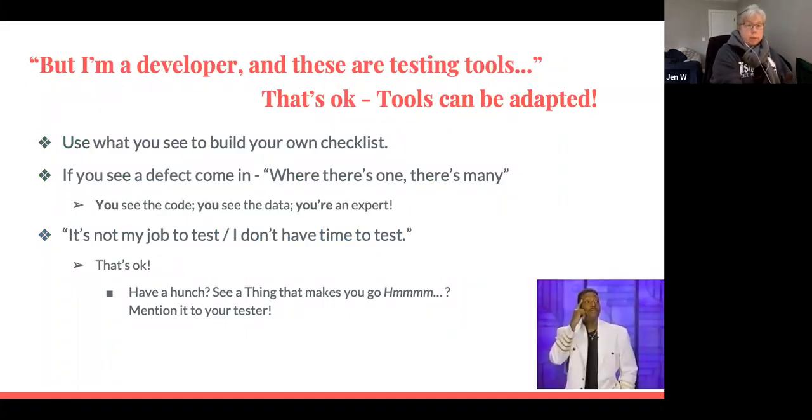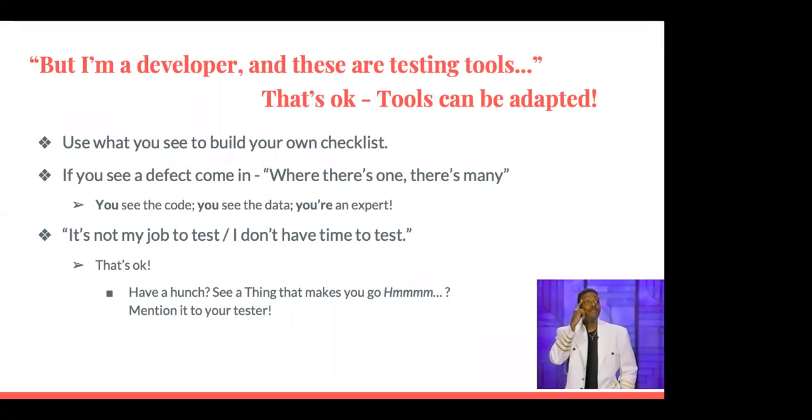So I know I have a lot of developers in the room. So you're a developer, but you're talking about testing tools. Well, that's okay. Tools can be adapted. So you can use what you see in your own world to build your own checklist. Maybe it's just for you. Maybe it's one you share with other devs. Maybe it's one you can share with the whole team. If you see a defect come in, you can think of, consider thinking about, I don't want to tell you how to do your job. You can think about thinking about where there's one, there's many. You see the code, you see the data, you're in it, up to your eyeballs, where there's one, there's many. What else might have gotten broken? What else might we want to test?